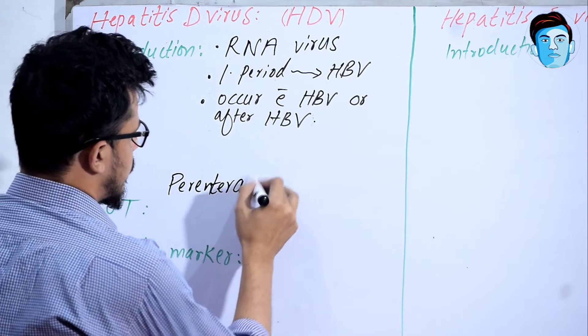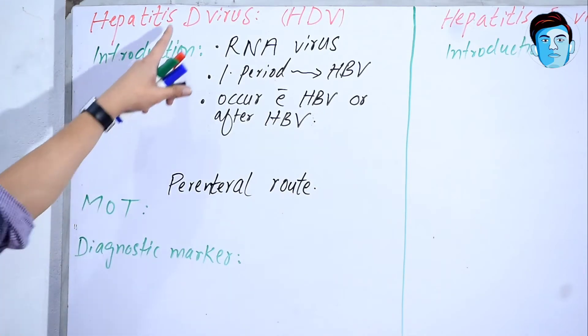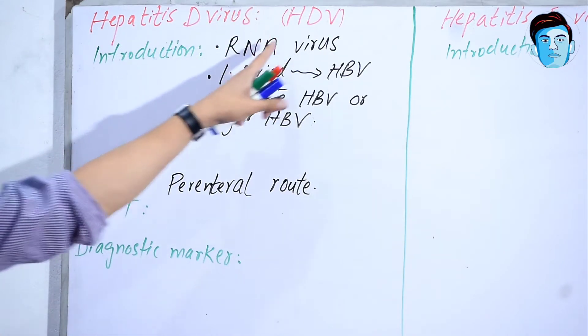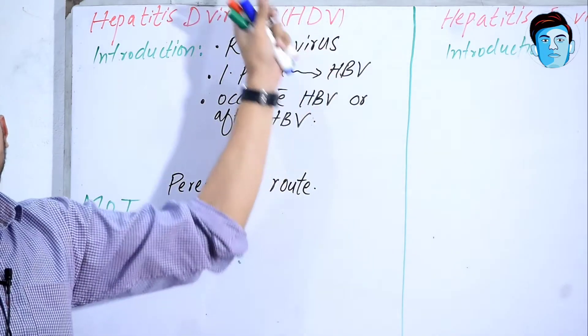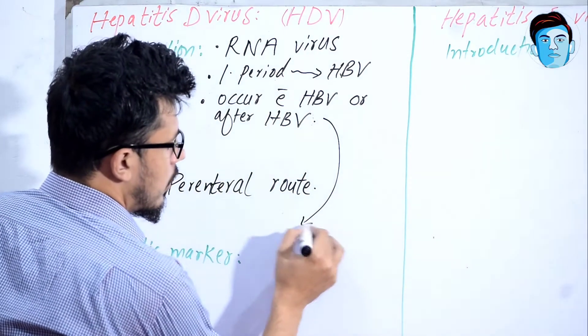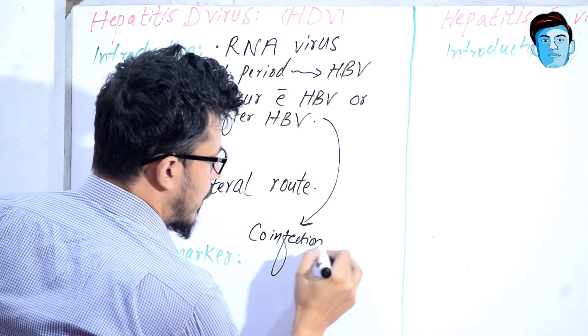This Hepatitis D virus is dependent on Hepatitis B virus. It is similar to Hepatitis B virus, but it is an RNA virus while Hepatitis B virus is a DNA virus. It is found with co-infection with Hepatitis B virus.